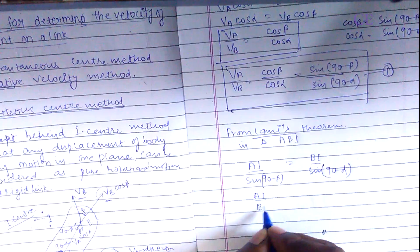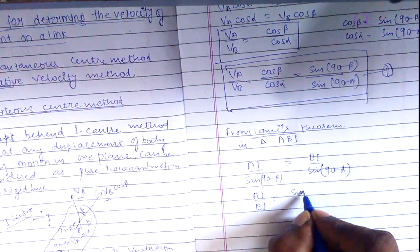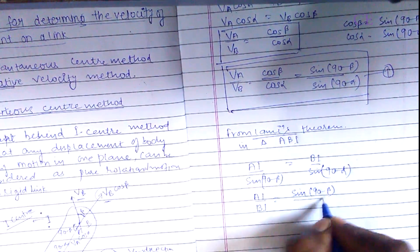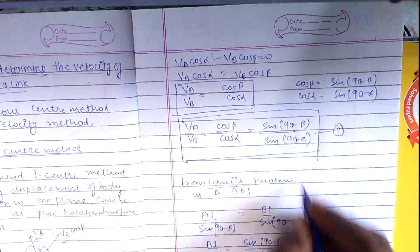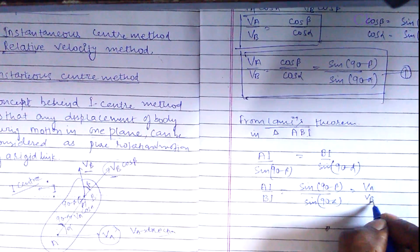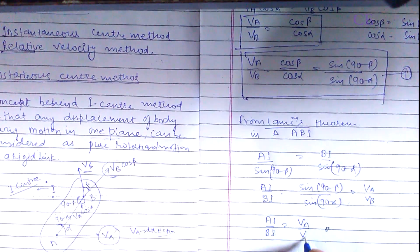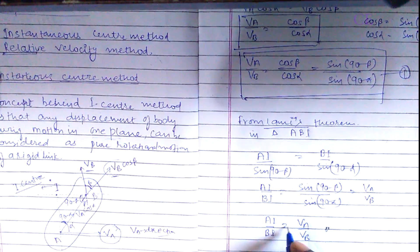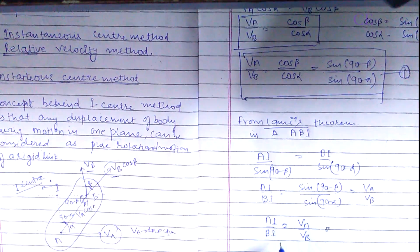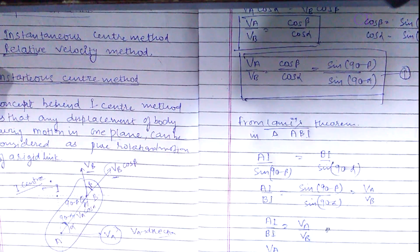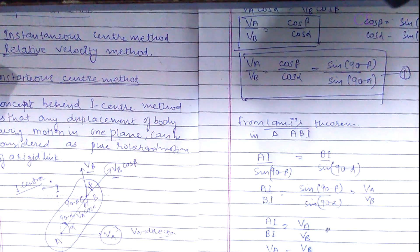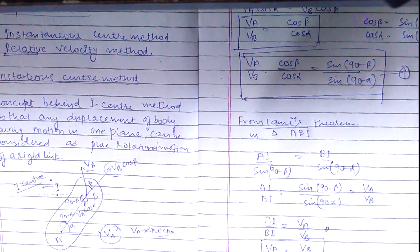From Lamy's theorem, we obtain AI upon BI equals sin(90 minus beta) upon sin(90 minus alpha). Combining this with equation one gives us AI upon BI equals V_A upon V_B, which can be rearranged to V_A upon AI equals V_B upon BI.